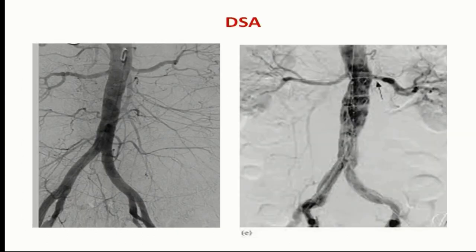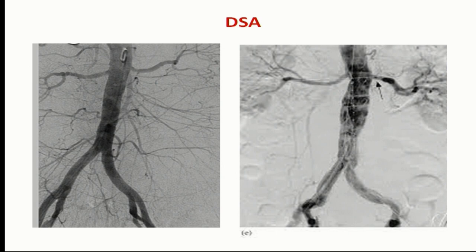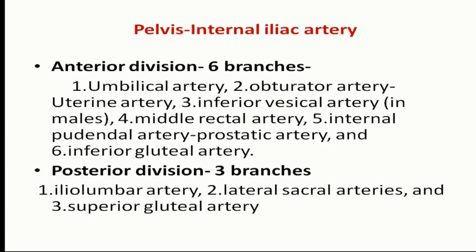Coming to DSA, which plays a double role: one is for diagnosis and second is for treatment. We take puncture from the femoral artery or radial artery, inject the dye, and see the arteries very clearly — gold standard technique, because we see from the origin to very small lower branches. This is the SMA, left renal, right renal, and a treated patient of aortic aneurysm post endograft. We see the arterial phase, nephrogram, and venous phase — three phases in one angiography. Importantly, DSA subtracts all other structures and shows only vascular anatomy, which is critical for endovascular surgery.